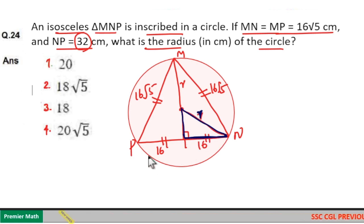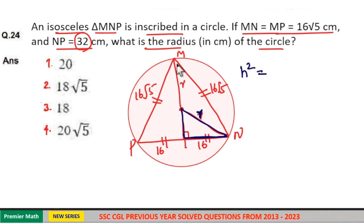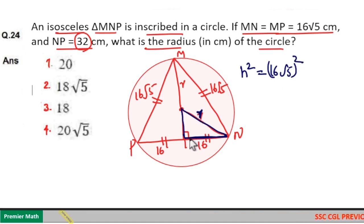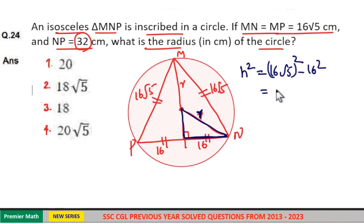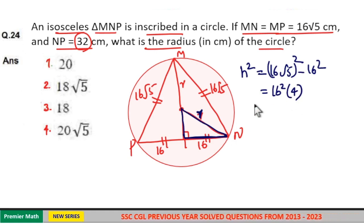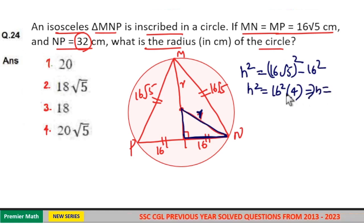But before that, we have to find the height of this triangle. So, H squared is equal to — from the larger triangle — H squared is equal to (16 root 5) squared minus 16 squared. This equals 16 squared times 5 minus 16 squared, which is 16 squared times (5 minus 1) = 16 squared times 4. So H is equal to 16 times 2 = 32.